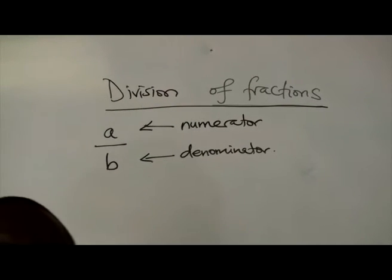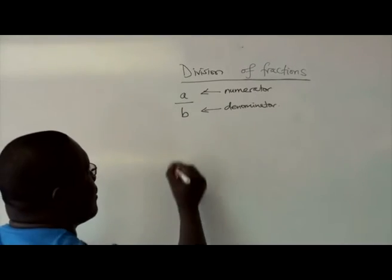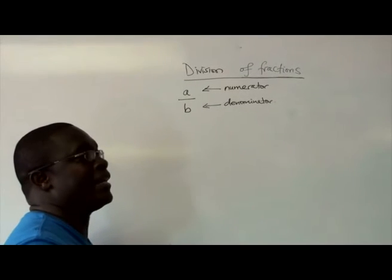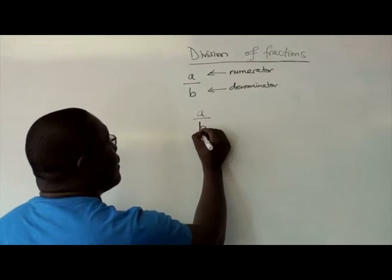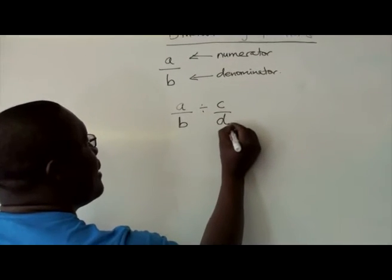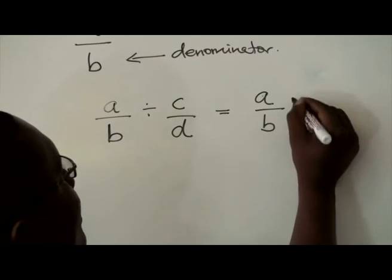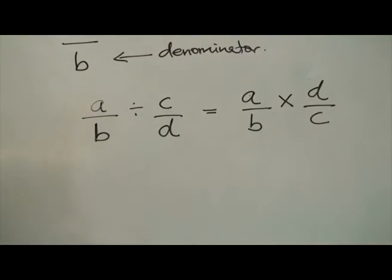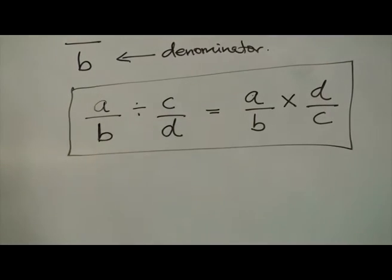When two fractions are being divided, the rule is as follows. I'll use letters initially, then I'll use numbers to actually explain the concepts. A over B divided by C over D would be equal to A over B times D over C. This is the law for division of fractions.